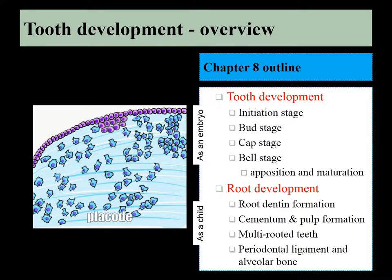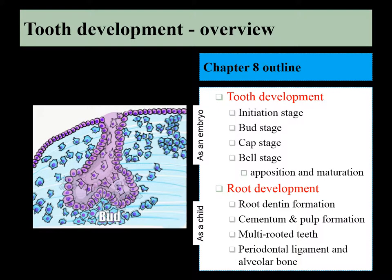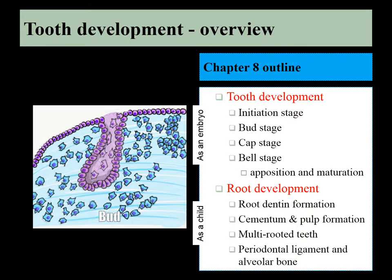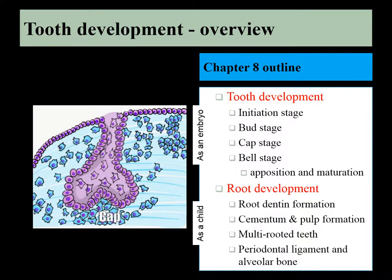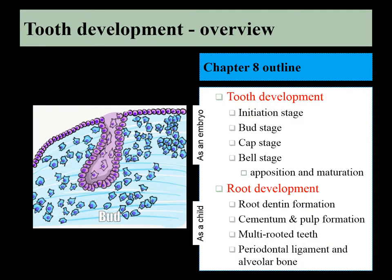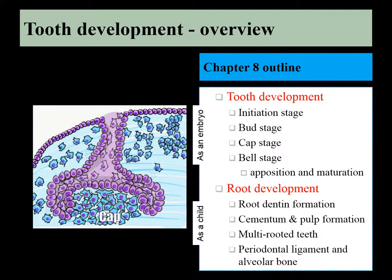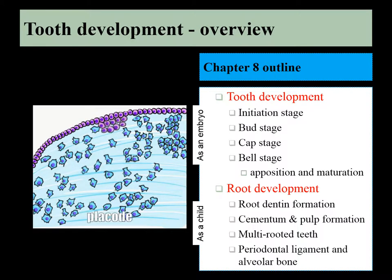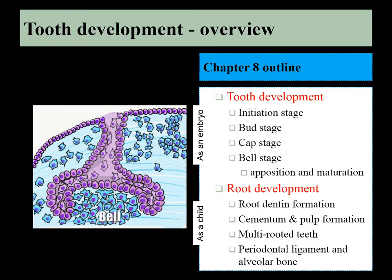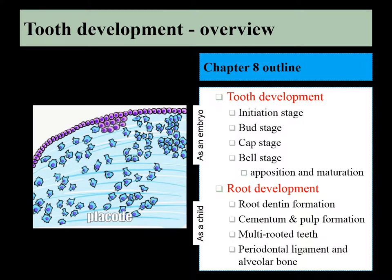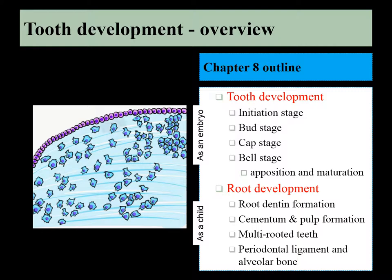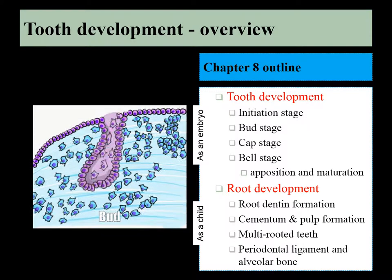Chapter 8: an overview of tooth development. There are two major phases. The first begins during the first trimester of embryonic development — the formation of the crown — occurring in four basic stages: initiation, bud, cap, and bell. Root development doesn't begin until childhood, causing eruption of primary or permanent dentition, where cementum, pulp, periodontal ligaments, and alveolar bone tissue begin forming.